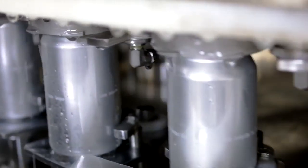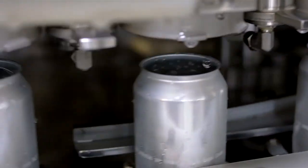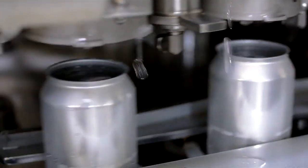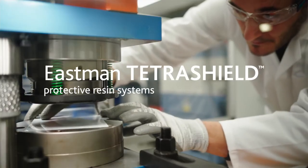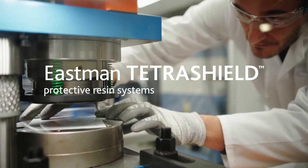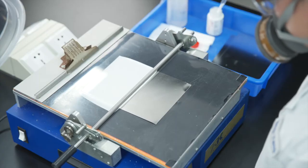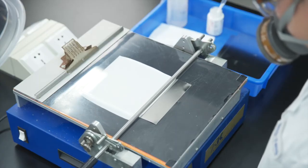With the ongoing need for non-BPA formulations and solutions for hard-to-hold content, Eastman's Tetra Shield resins are a key part of this transition, along with the regional formulators that are helping us drive this market change.